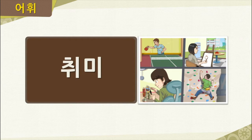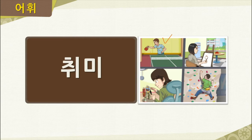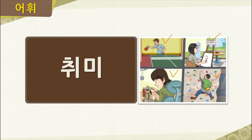Our next word is 취미. In the picture, these people have time: one person plays table tennis, another paints, another builds a figure, and another is climbing. These are all done for fun, so these activities are examples of hobbies — or in Korean, 취미. Let's say the word together one more time: 취미.